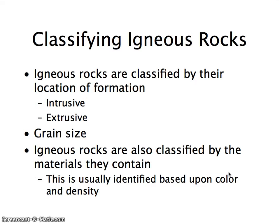We classify igneous rocks based on two — actually three — things. They are classified by their location of formation: intrusive or extrusive. We can also classify by grain size, meaning mineral or crystal size. And they are also classified by the material they contain, which is based upon their color and density.